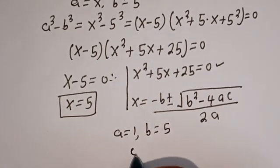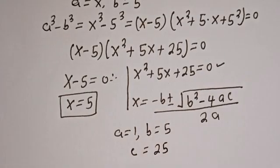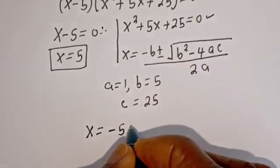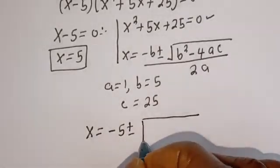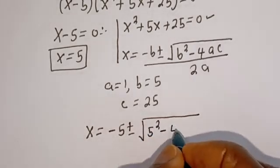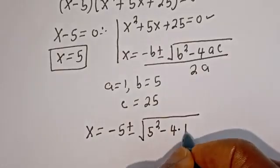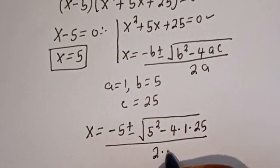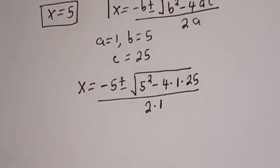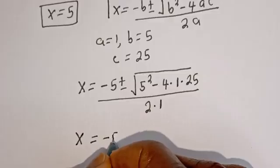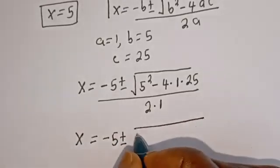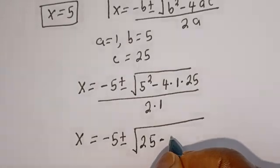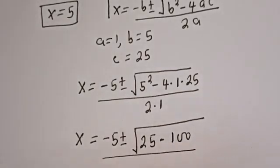From this equation, a is equal to 1, b is equal to 5, and c is equal to 25. Substituting: s is equal to minus 5 plus or minus square root of 5 squared minus 4 multiplied by 1 multiplied by 25, divided by 2 multiplied by 1. That gives us s equal to minus 5 plus or minus square root of 25 minus 100, divided by 2.